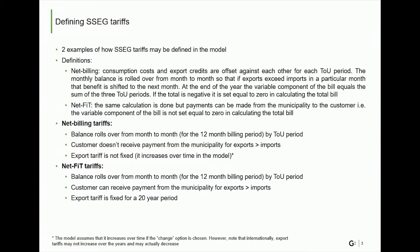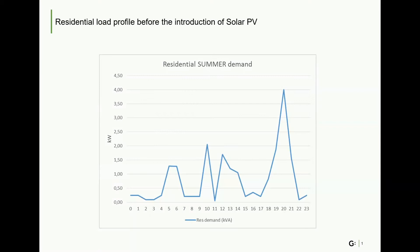So far, most municipalities with SSEG tariffs have adopted a net billing approach. Let's now take a brief look at how installing solar PV and changing to an SSEG tariff will affect an individual's electricity bill. This slide shows demand for a typical household on a summer's day. You can see the early morning peak between 5 and 6 a.m., then additional peaks at 10 a.m. and noon, and at the end of the day there's the biggest peak. The peak between 5 and 6 will be because of the lights coming on, water being heated and cooking. At 10 it will be because of water heating, between 12 and 2 because of cooking and the pool pump, and the evening peak is due to water heating, cooking, and general appliances.